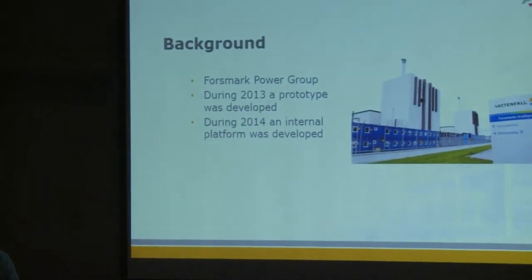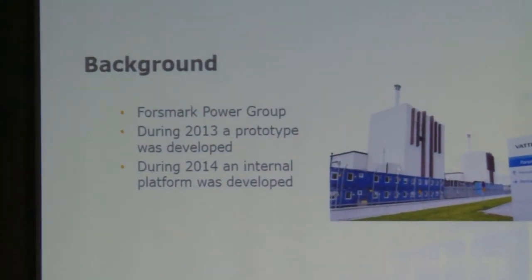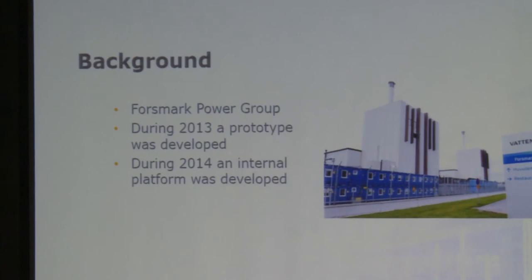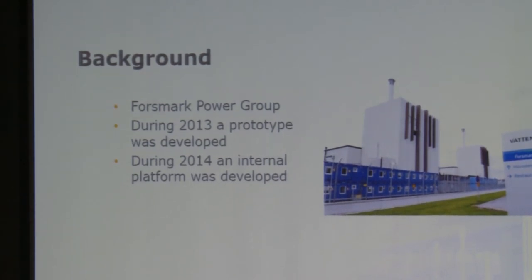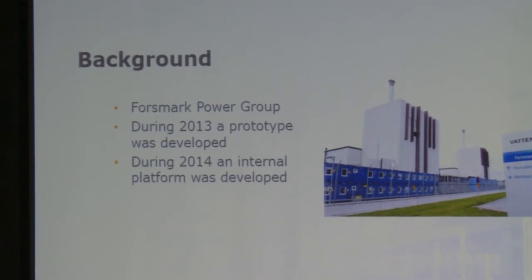The Forsmark Power Group is a part of Vattenfall, a very large Swedish company with operations in Germany and all of Europe. Forsmark Power Group only has the nuclear power plant at Forsmark. During last year, we made a prototype for them showing how they could use their CAD and BIM data in a web map platform. They liked it quite a lot, so this year we've been doing a larger project with FME, which is soon to be finished and going into production this autumn.